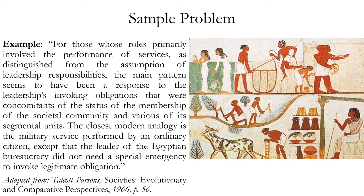Let's look at another example. This is a short excerpt from a book by Talcott Parsons called "Society's Evolutionary and Comparative Perspectives," a textbook written in 1966. This example illustrates very well the sometimes unnecessarily complex, abstract, and convoluted writing used by academics. The passage discusses ancient Egypt — there's a picture of an Egyptian mural provided to give context — but it's still very wordy, convoluted, and abstract, and difficult to interpret.